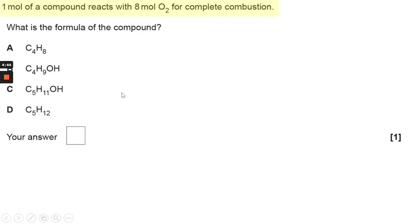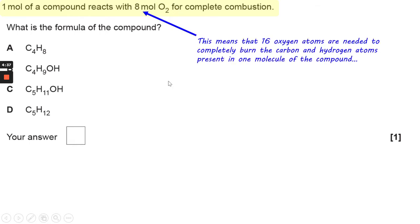It tells you that there's one mole of a compound that reacts with eight moles of oxygen for complete combustion. So it means 16 oxygen atoms are needed to completely burn the carbon and hydrogen atoms present in one molecule of the compound.